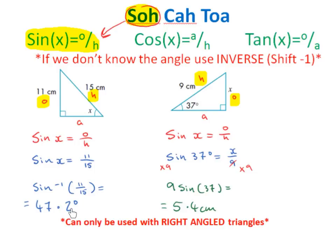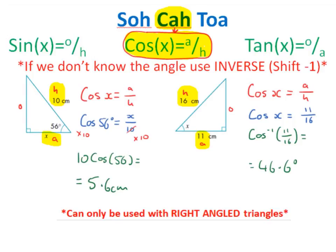It's very important to note that we can only use SOHCAHTOA with right-angled triangles, just like we can only use Pythagoras' theorem with right-angled triangles. In our next example, we have a right-angled triangle with a hypotenuse of 10, an adjacent of x, and an angle of 56 degrees. Since we're using h and a, we go with CAH — cos of x equals a divided by h. We substitute: x becomes 56 degrees, a becomes x, and h becomes 10. So cos of 56 degrees equals x divided by 10. Multiplying across by 10 gives us 10 cos of 56, which equals 5.6 centimetres rounded to one decimal place.